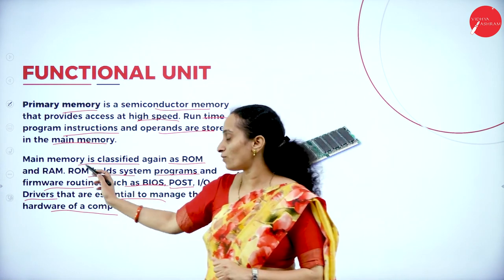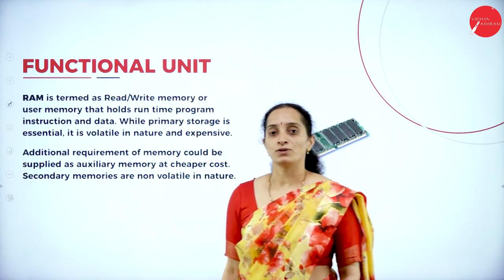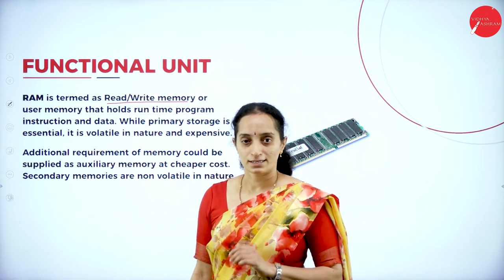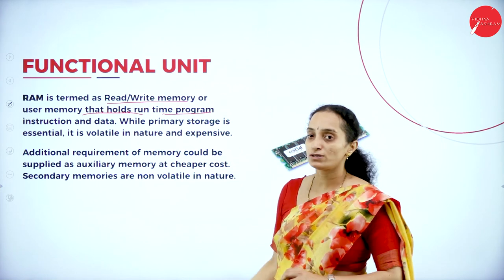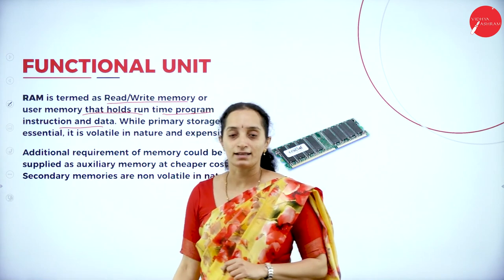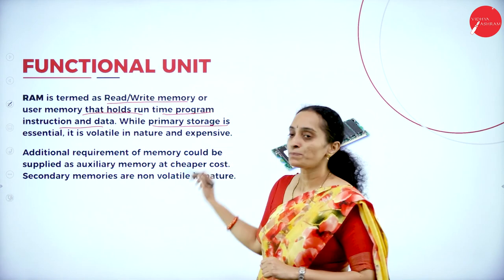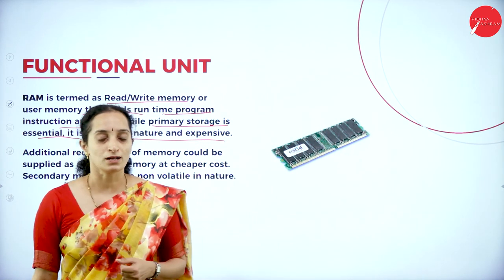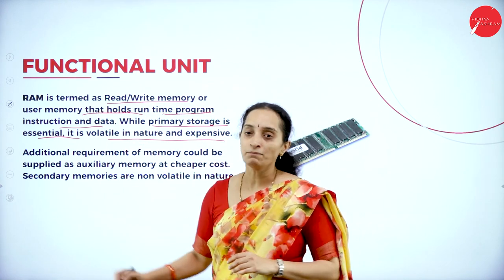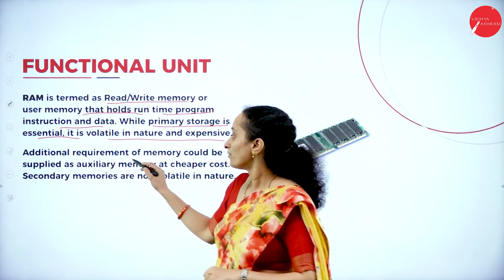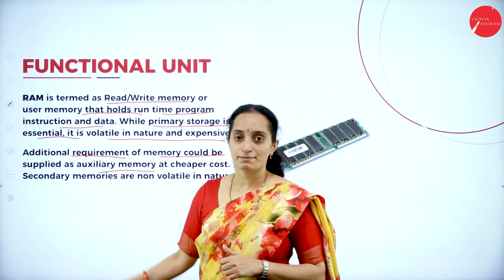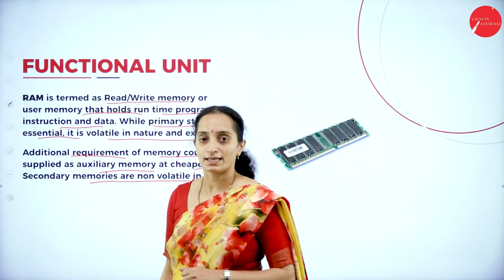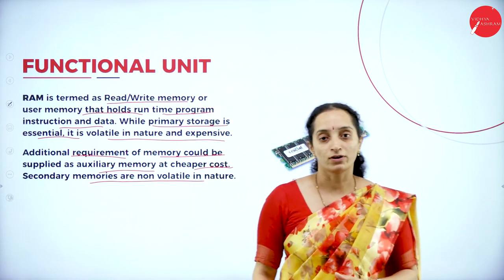The RAM or random access memory is termed as read or write memory — you can read as well as write data into it. It is the user memory that holds the runtime program instructions and data. However, RAM holds only temporary data; it is volatile in nature, meaning when you switch off the computer, all data stored in the RAM will be erased. The additional requirement of memory could be supplied as auxiliary memory at a cheaper cost. Secondary memories are non-volatile in nature.